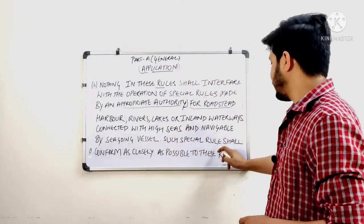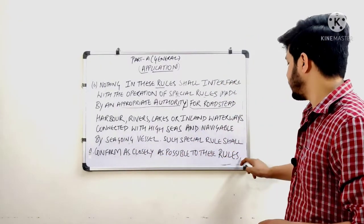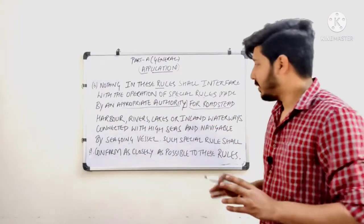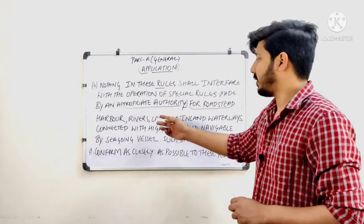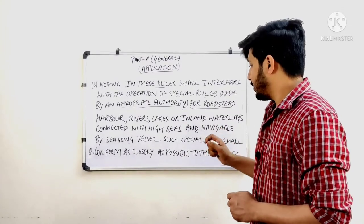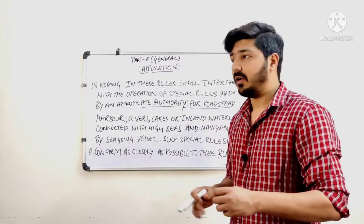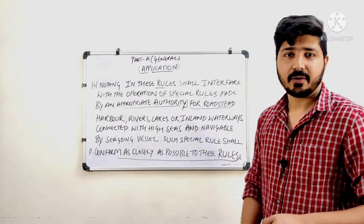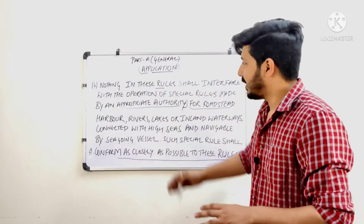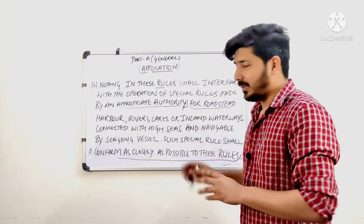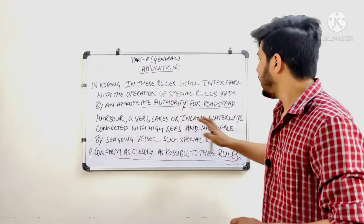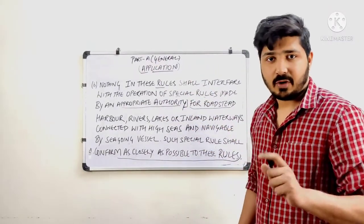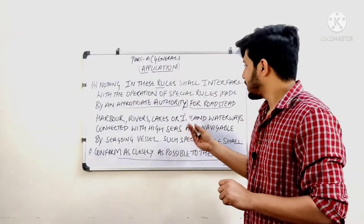Such special rules shall conform as closely as possible to these rules. This simply means if any appropriate authority has made special rules for vessels navigating in their areas — whether harbor, lakes, or rivers — those rules shall not differ so much that they create conflict or confusion. They should be as close as possible to the ROR. Understanding this is very easy even though mugging it up can be a task.